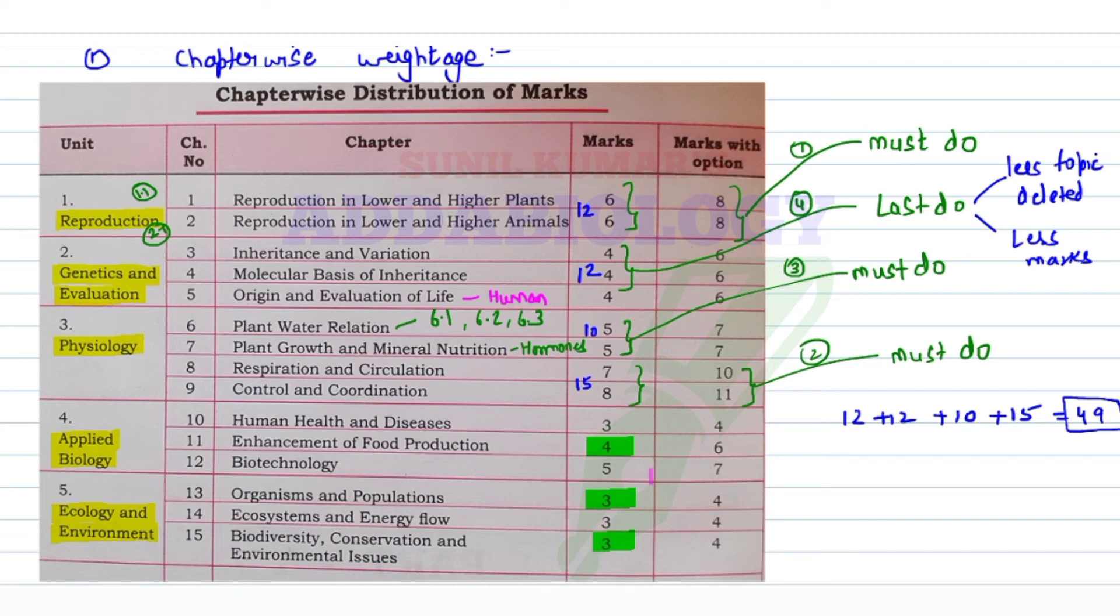If you have time after this, you can go for enhancement of food production, then biodiversity and environmental issues, and organism and population. At the last, students, you're going to do biotechnology because it's a very vast chapter - it's only for 5 marks, so study selected important topics.